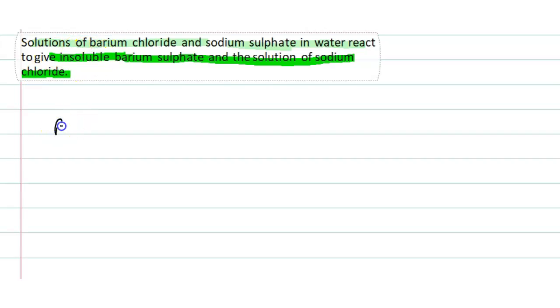Barium chloride is BaCl2, and sodium sulfate is Na2SO4. In water they react to give insoluble barium sulfate BaSO4 and sodium chloride NaCl.